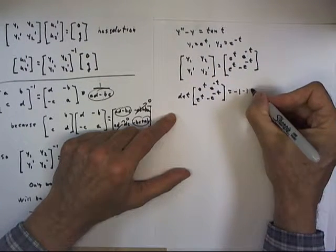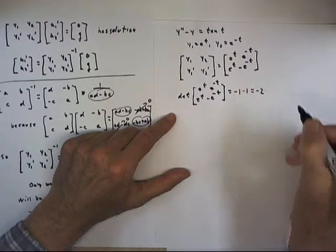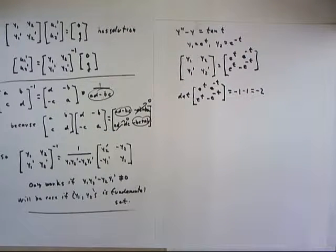but of course we subtract it, so we get negative 1 minus 1, and that equals negative 2. So the determinant of our matrix is negative 2.